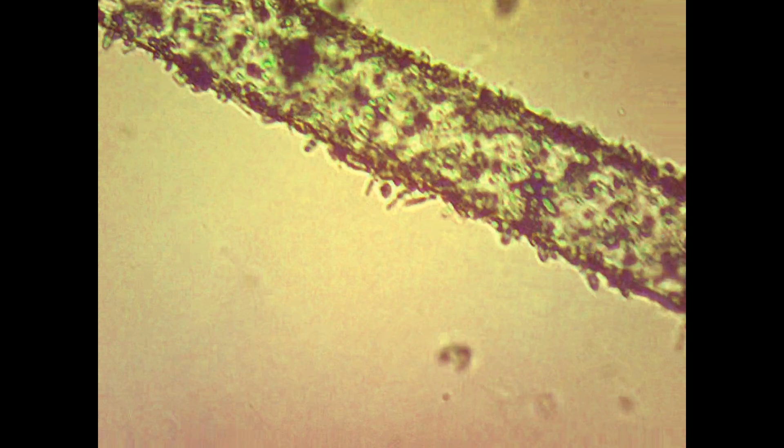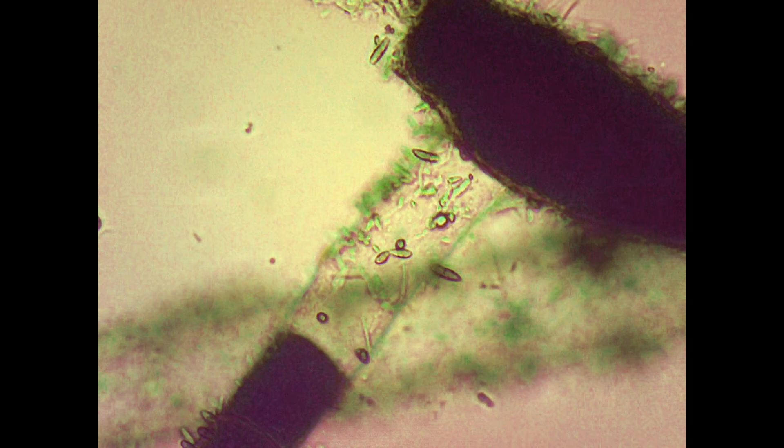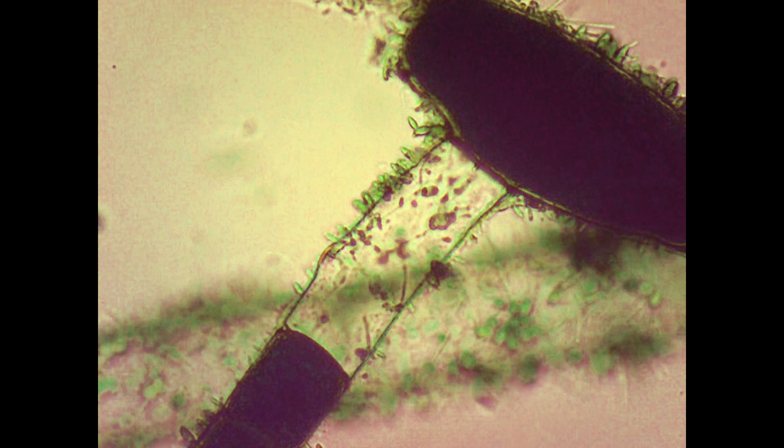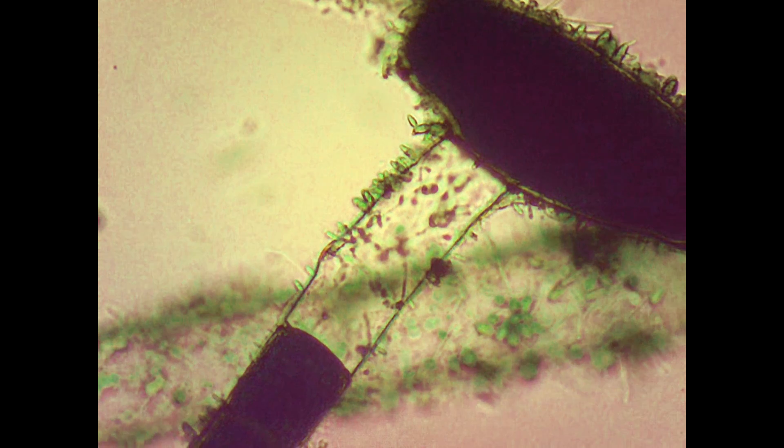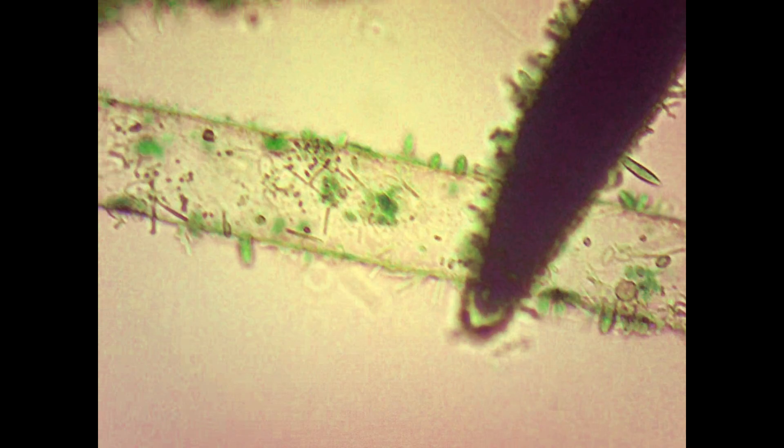As we cruise around at a higher magnification, we can get a better view of the various structures inside of each cell. We unfortunately don't have enough resolution to determine what every structure is, but it would be fair to say that all the small green spheres we see are chloroplasts, which are the structures where photosynthesis takes place.